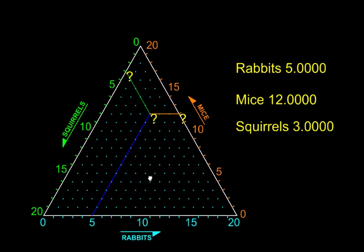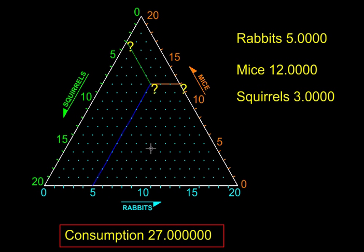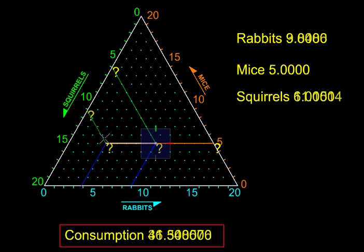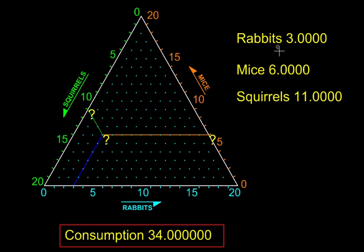You can move it also. Say at this point there will be nine rabbits, five mice, six squirrels consuming 41.5 berries. And at this point there will be this combination of pets consuming 34 berries, and so on.